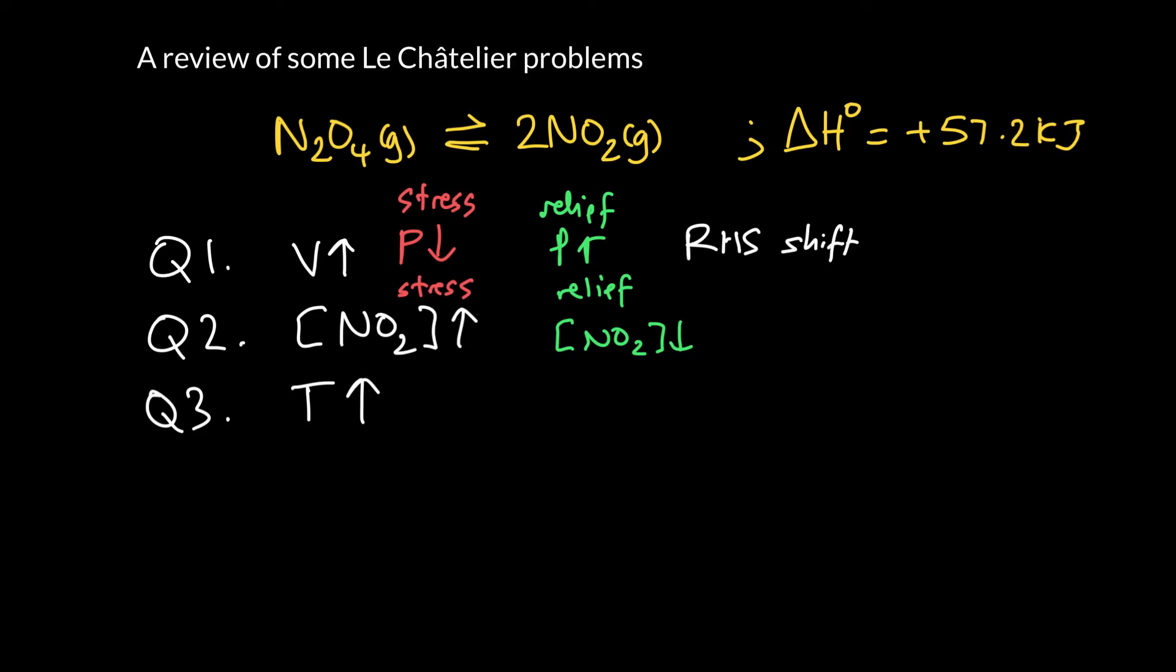If we want to decrease the NO2 concentration, we have to take some NO2 and turn it into something else. Not all of it, just some of it. We're going to see a shift to the left-hand side. On our ice chart, we would write minus x's under here and plus x's under here. It's almost like Q is too large here.